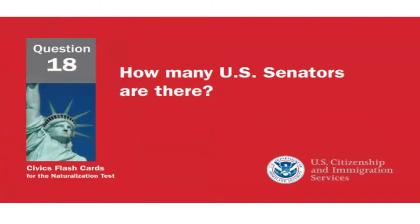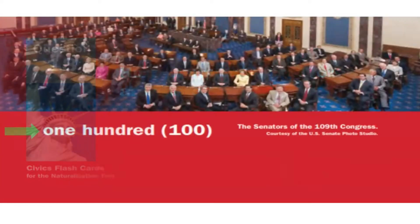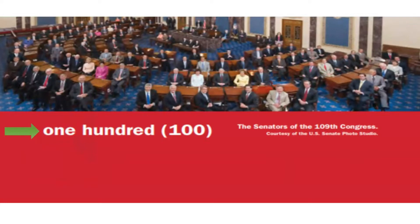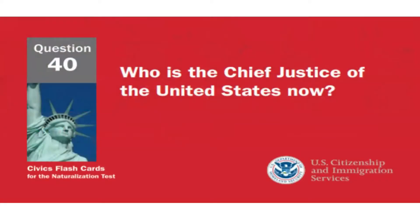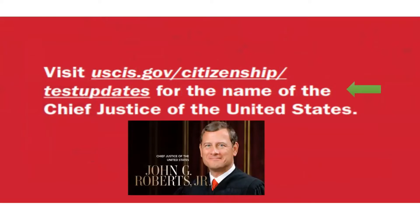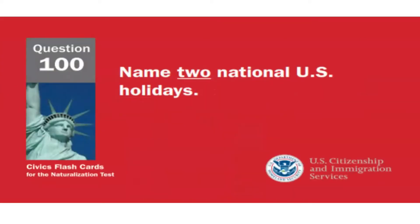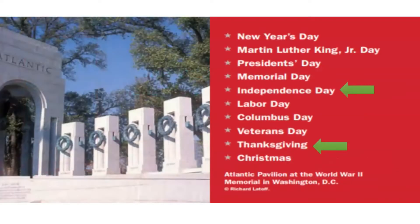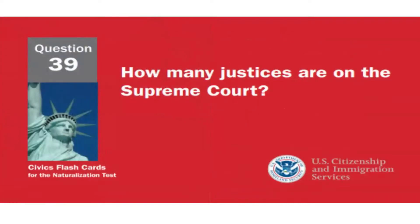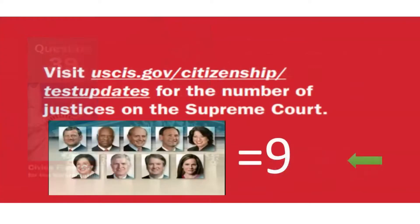What are two rights in the Declaration of Independence? Life and liberty. What does the president's cabinet do? Advises the president. How many U.S. Senators are there? 100. Who is the Chief Justice of the United States now? John Roberts. Name two national U.S. holidays. Independence Day and Thanksgiving Day.